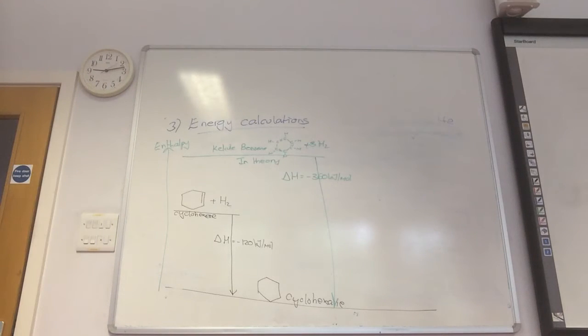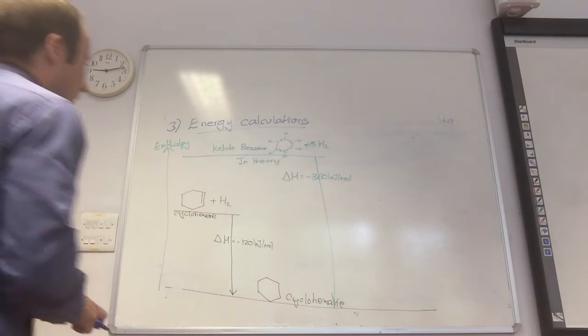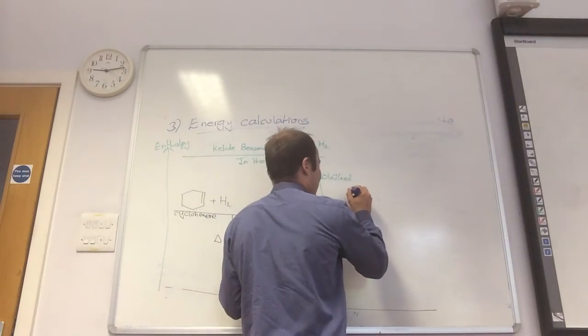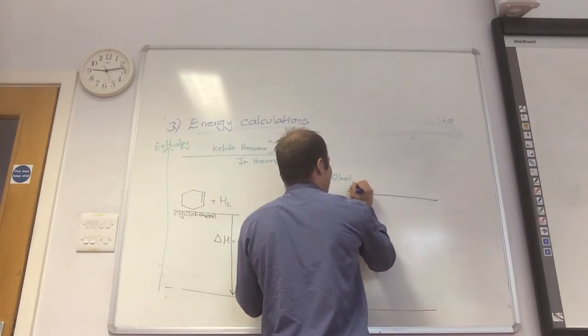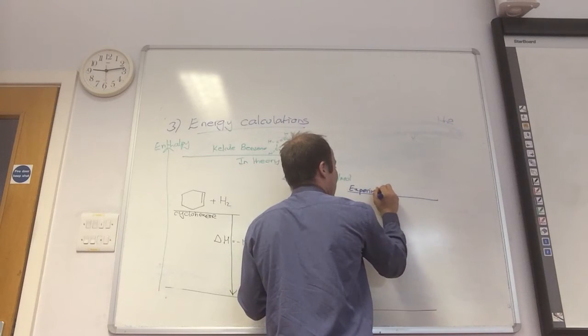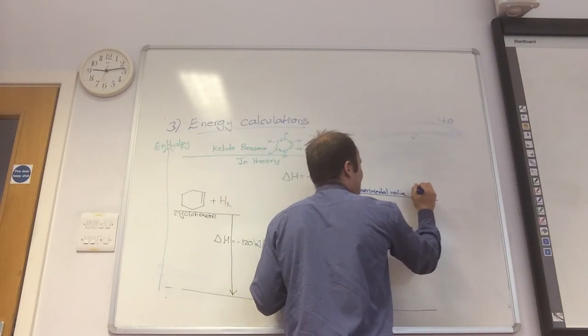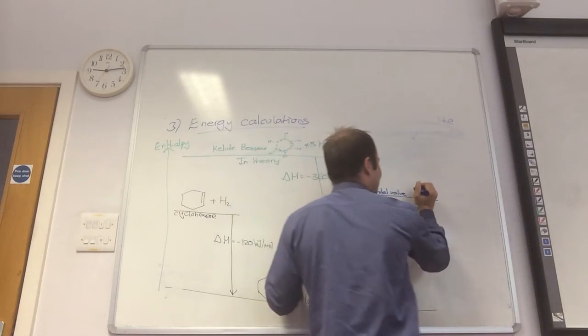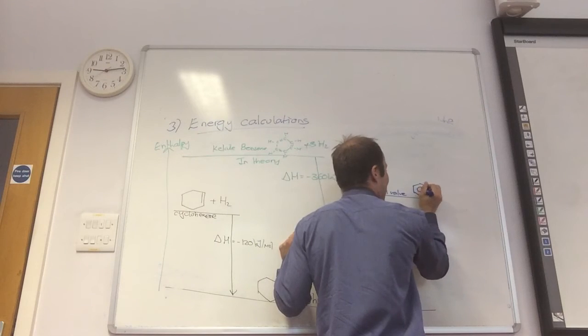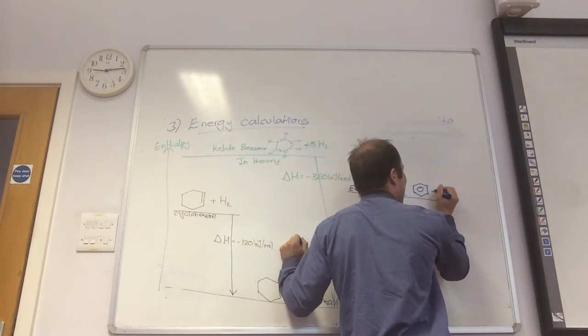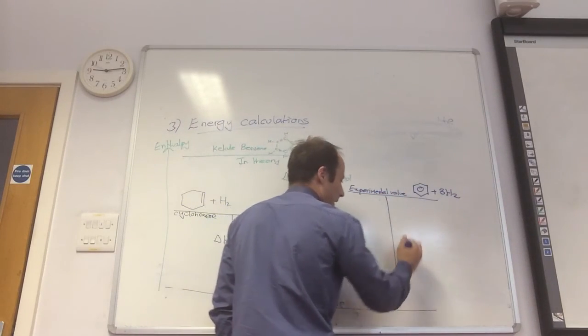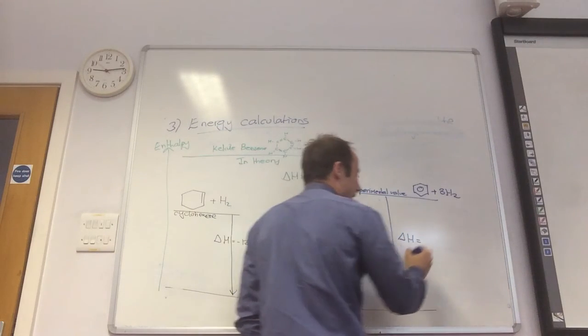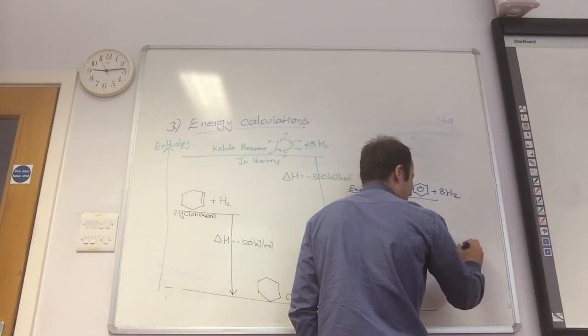So then the chemists in the lab come along, and they actually do the experiment. They take benzene, so I'm going to call this real benzene, and this needs to be in between those two lines. So this is the experimental value. So I take real benzene. I'm going to draw it as a little hexagon with a circle in the middle, because that's how we actually represent it. And I react it with three hydrogen molecules. I do the actual experiment, and I find delta H to actually be equal minus two hundred and eight kilojoules per mole.